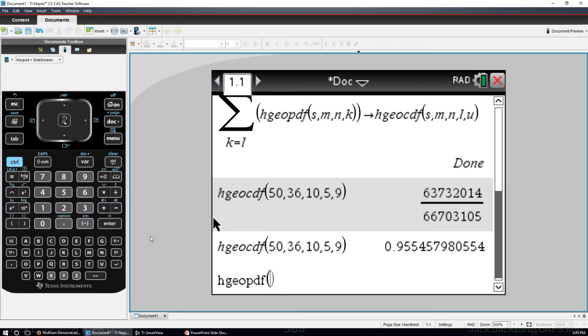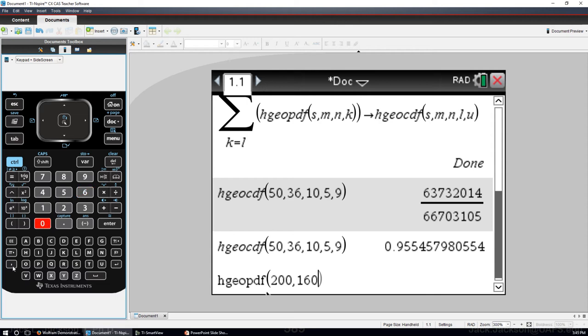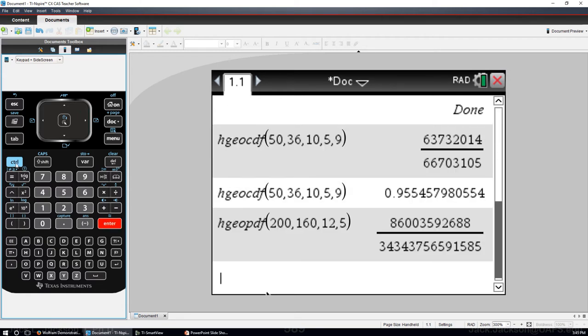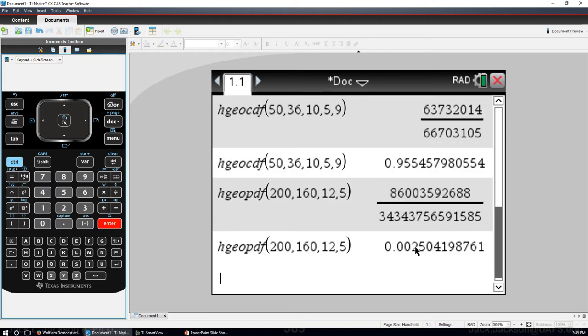This tells us it's a function and we want the pdf. So hgopdf in this example was 200 for the population size and then it was 160 for the number of successes in the population. We did a sample size of 12 and we want the probability x equals 5 and then enter. There it is exactly. Control enter will approximate that.